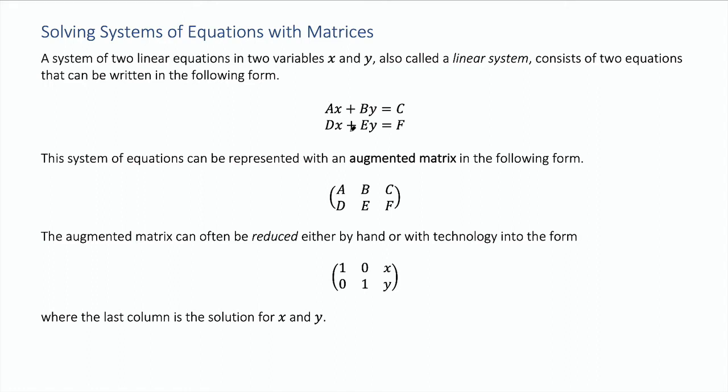To do this, there are many methods, but one method is to use matrices. We use what's called an augmented matrix, which is just a matrix that lists the coefficients of these equations and what they're equal to on the right.